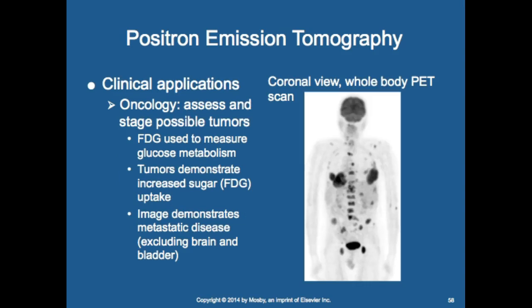For oncology, PET assesses and stages possible tumors. FDG is used to measure glucose metabolism; tumors demonstrate increased sugar uptake. The image demonstrates metastatic disease including brain and bladder. We call areas of increased uptake 'hot spots.'